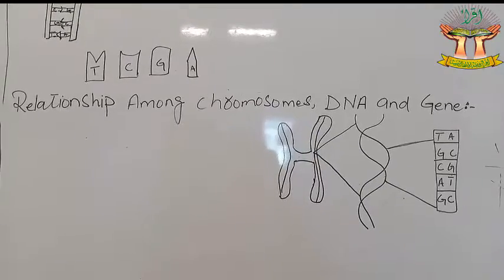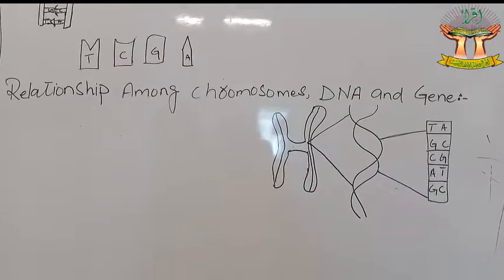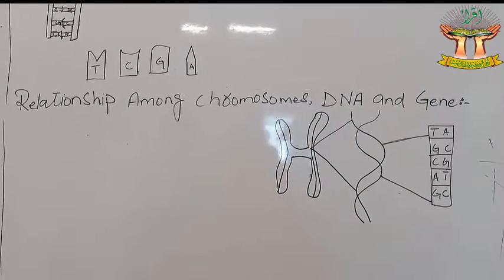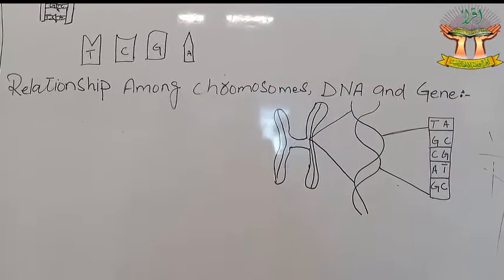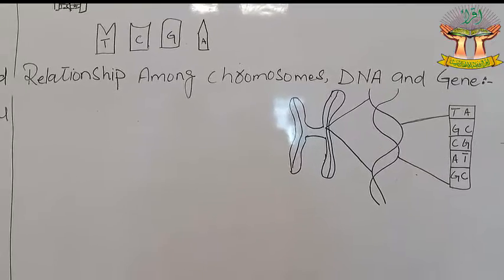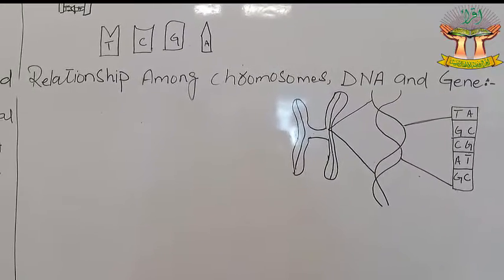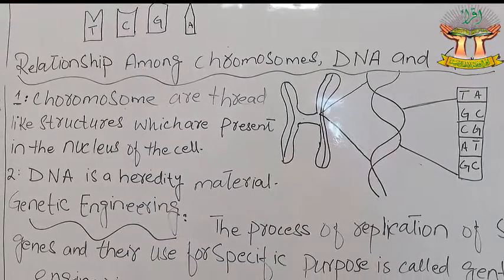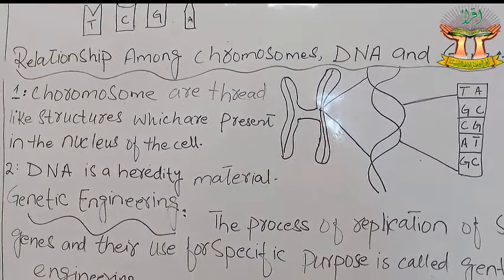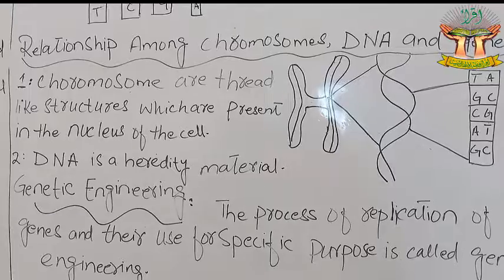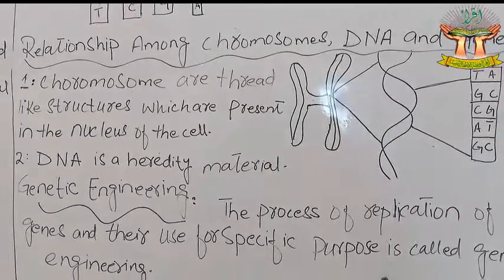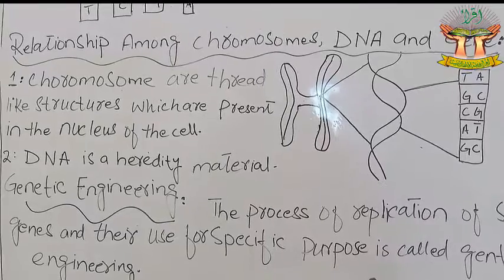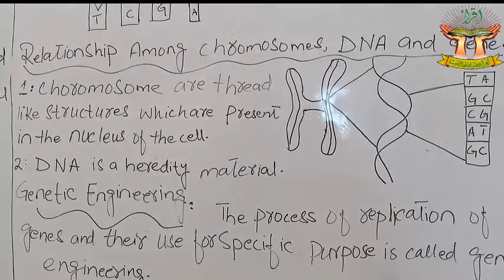The next topic is the relation among chromosomes, DNA, and genes. Chromosomes are thread-like structures present in the nucleus of the cell. Chromosomes are made of DNA and protein.